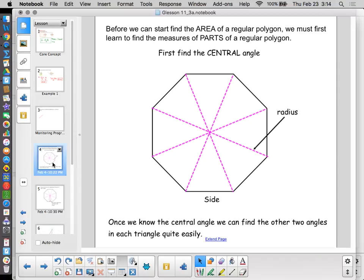A regular polygon, remember, is one that all the sides are congruent and all the angles are congruent. That's what makes up a regular polygon. No matter how many sides and how many angles there are, all the sides are congruent and all the angles are congruent.